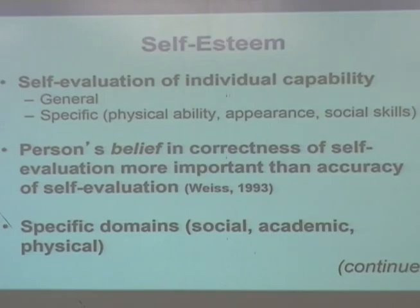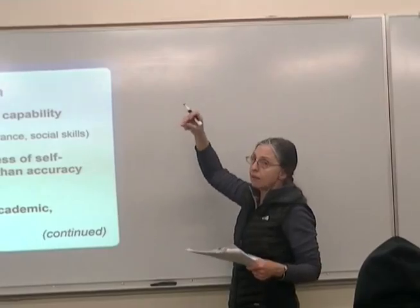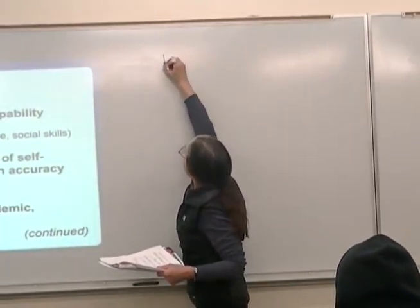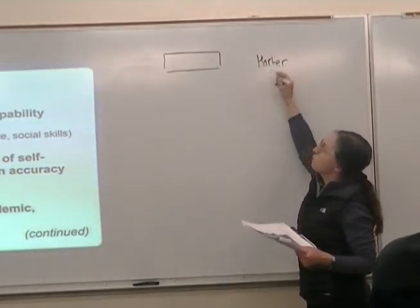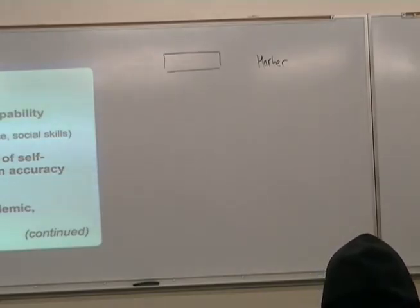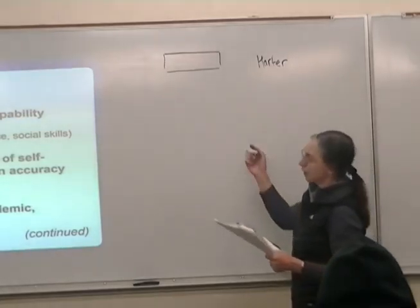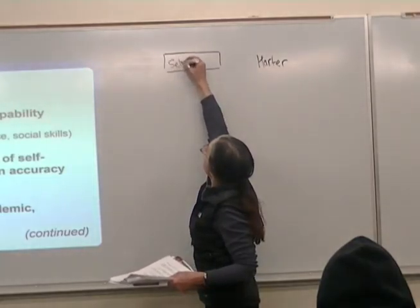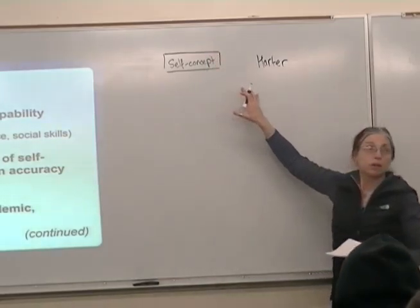So I want to give you another idea to think about that they don't use in the book, but it's quite an interesting model. It's a hierarchical model of self-concept and perceived competence. We're going to come back to the idea of perceived competence in a couple of weeks. This model was developed by a lady called Susan Harter. The book does have some of her work — she's done a lot of work with children, adults, and youth on self-esteem and the development of self-esteem.